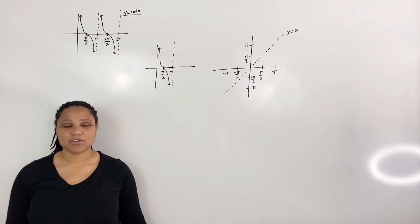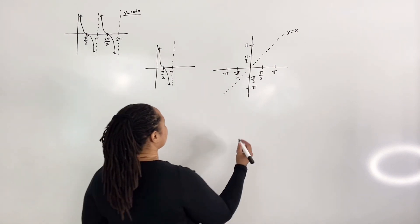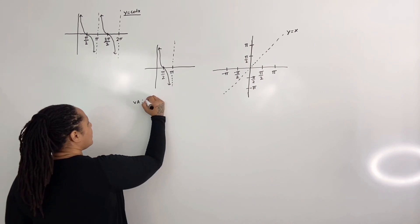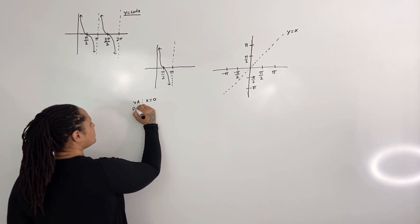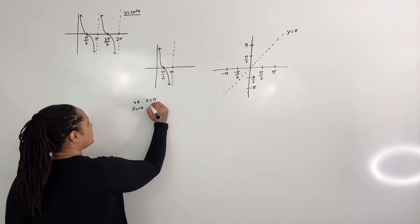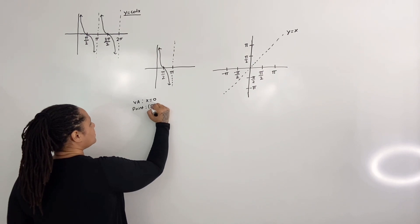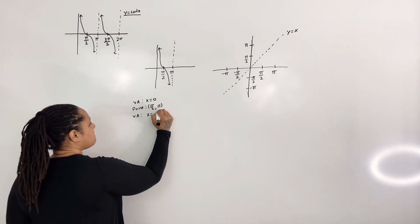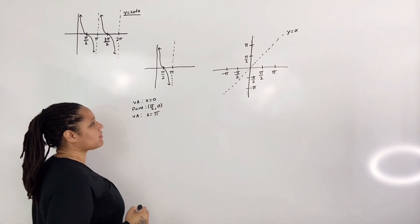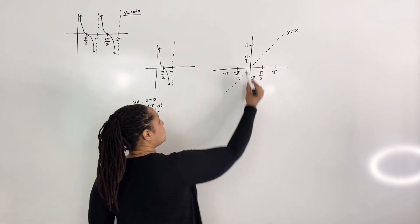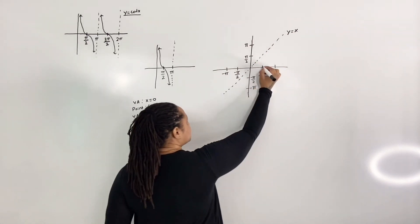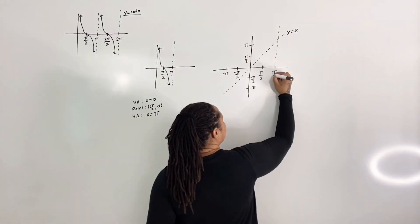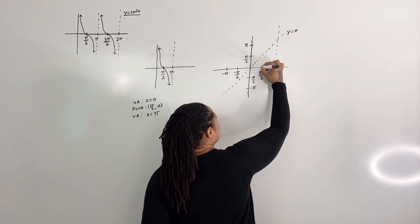Step 3: draw the restricted graph of cotangent. We know that we have a vertical asymptote at x equals 0, we have a point at (pi over 2, 0), and we have another vertical asymptote at x equals pi. So our graph is going to swing like this between those asymptotes.